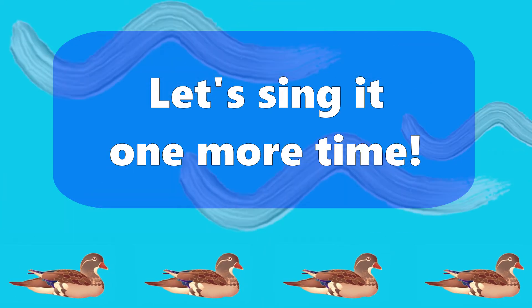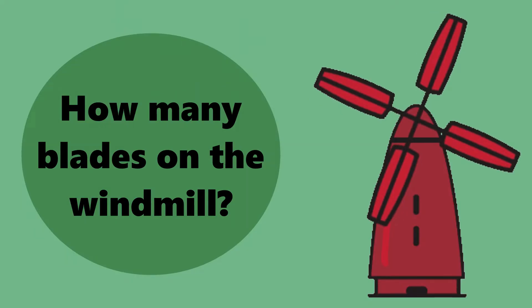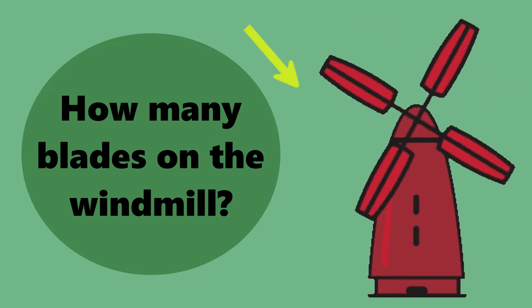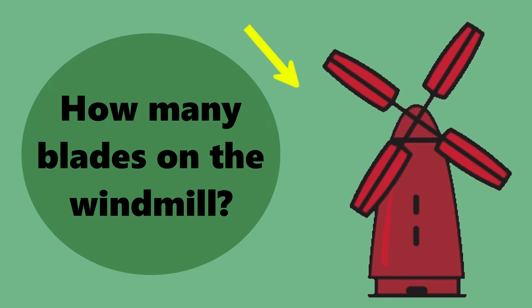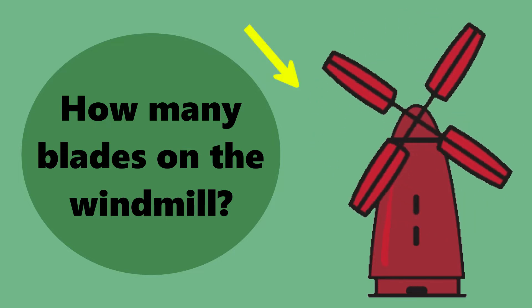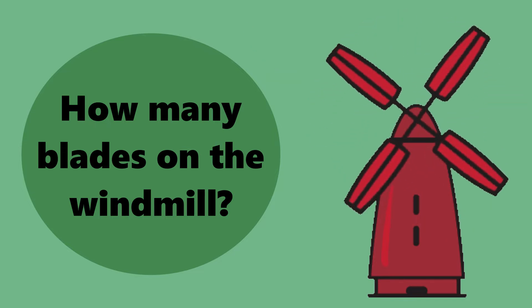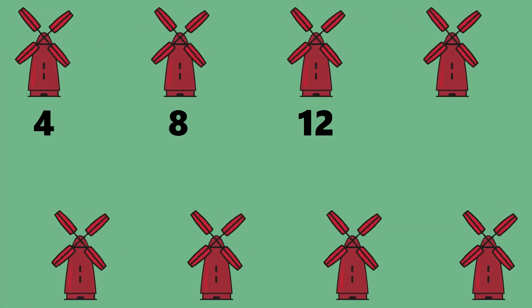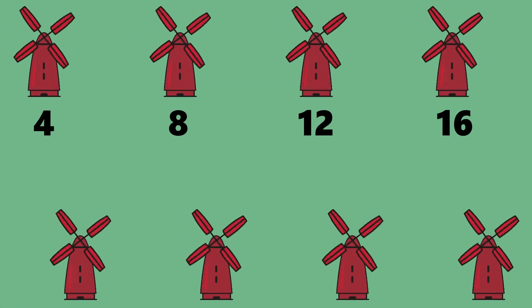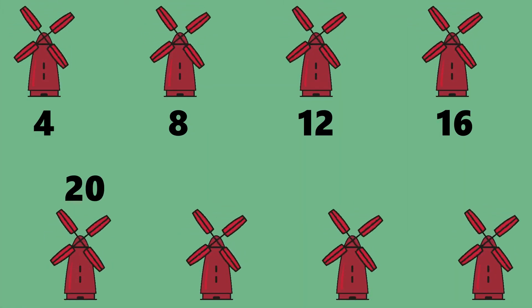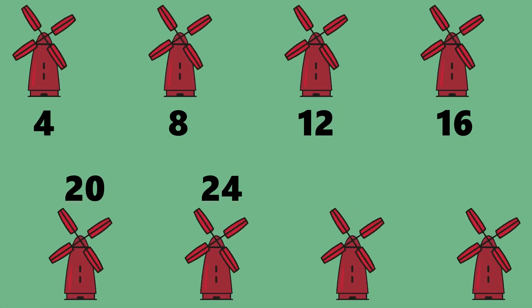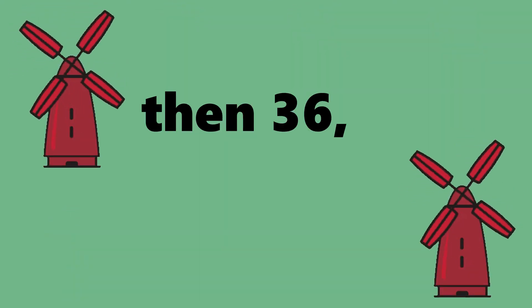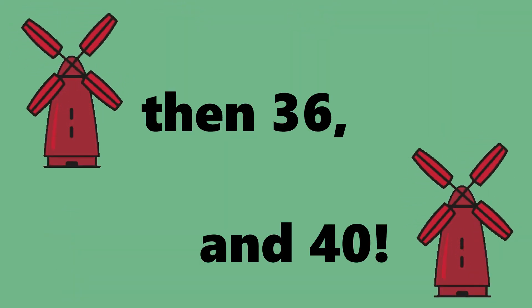Let's see it one more time. How many blades on the windmill? Let's count by fours. 4, 8, 12, 16, 20, 24, 28, 32, 36, 40.